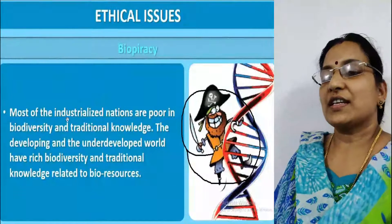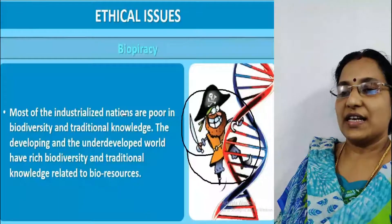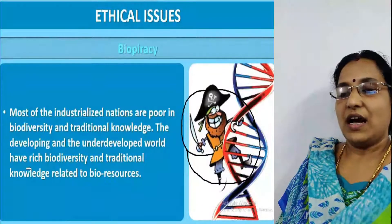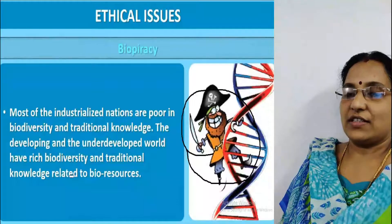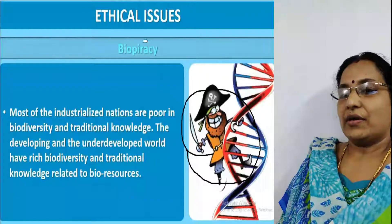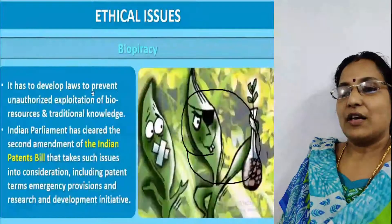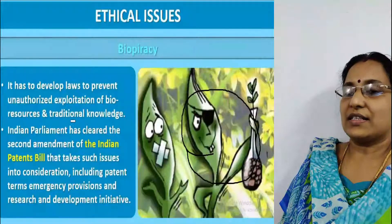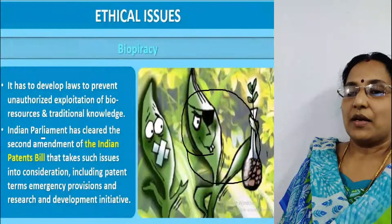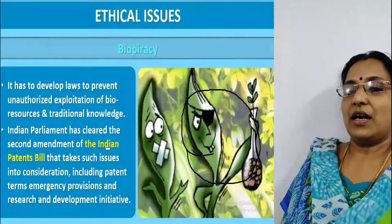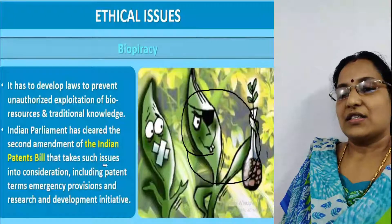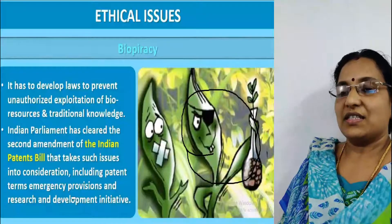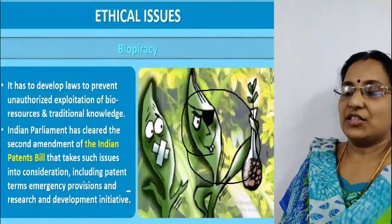Most industrialized nations are poor in biodiversity and traditional knowledge, whereas developing and underdeveloped countries have rich biodiversity and traditional knowledge related to bio-resources. Laws must be developed to prevent unauthorized exploitation. The Indian Parliament has cleared the second amendment of the Indian Patent Bill, addressing patent terms, emergency provisions, and research and development initiatives.